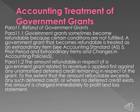Para 11: Refund of Government Grants. Government grants sometimes become refundable because certain conditions are not fulfilled. A government grant that becomes refundable is treated as an extraordinary item — see Accounting Standard AS 5. Para 11.2: The amount refundable in respect of a government grant related to revenue is applied first against any unamortized deferred credit remaining in respect of the grant. To the extent that the amount refundable exceeds any such deferred credit, or where no deferred credit exists, the amount is charged immediately to profit and loss statement.